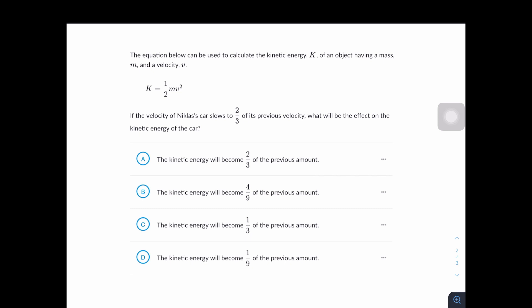So the variable being manipulated here is v, velocity. And it's saying that the velocity of Nicholas' car slows to two-thirds of its previous velocity. So the equation will now become m and it will be two-thirds of v since it says slows to two-thirds of its previous velocity. So two-thirds v squared. And this is equal to one-half m and two-thirds squared is four-ninths v squared.